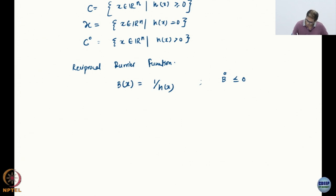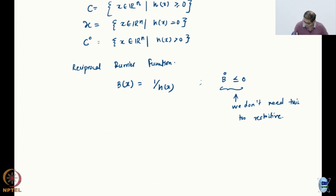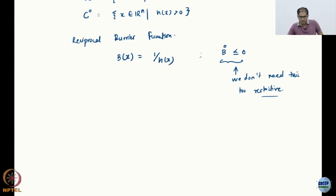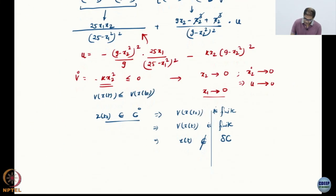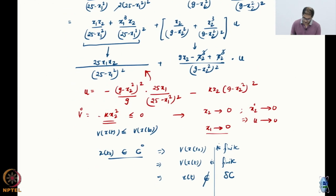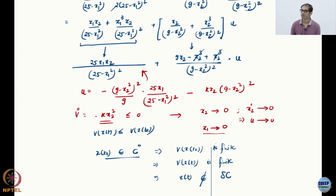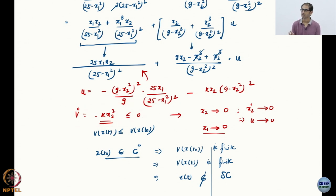And the condition we imposed was that B_dot is less than or equal to 0. This is the condition we were imposing. However, we do not need this — it is too restrictive. It can be shown that this is going back to the same idea that everything inside is also being made invariant in some sense. So we do not particularly need this.